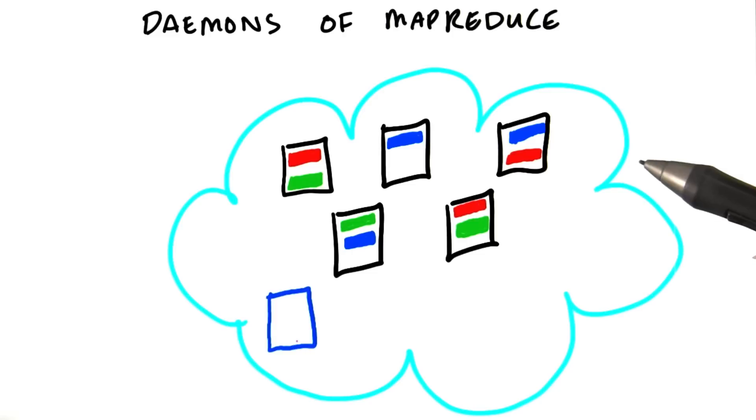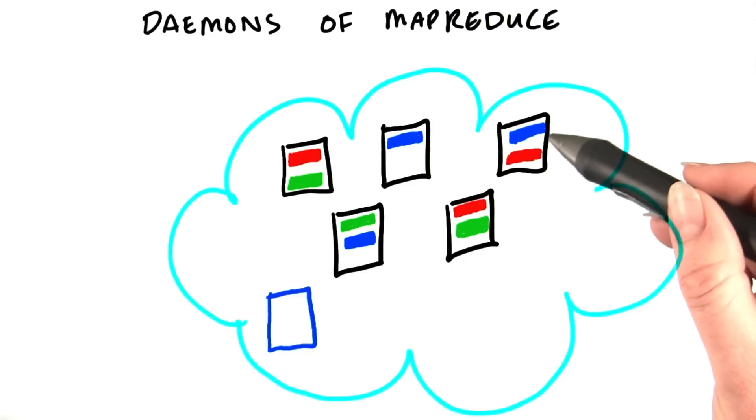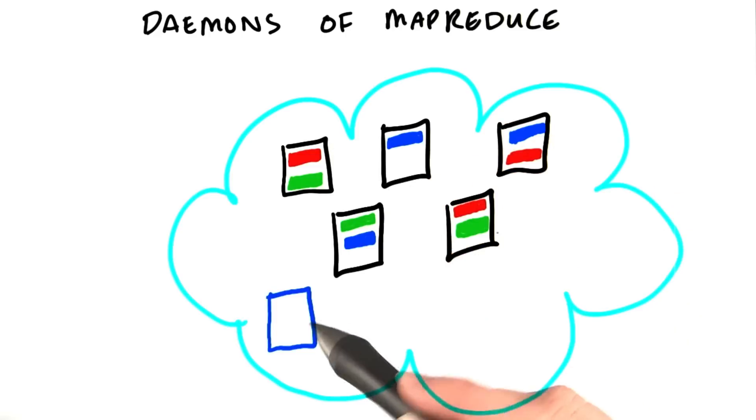Just as we saw with HDFS, there are a set of daemons, which is just a piece of code running all the time, running on each of these machines. There were the data nodes and the name node.